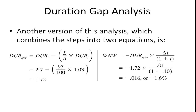Multiplying that by the hundred million, we know that net worth decreases by 1.6 million — the same result as before. This formula, combined with income gap analysis, allows us to look at the change in the market value of assets, while the income gap part helps us understand the change in income from the gap in rate sensitive assets and rate sensitive liabilities.